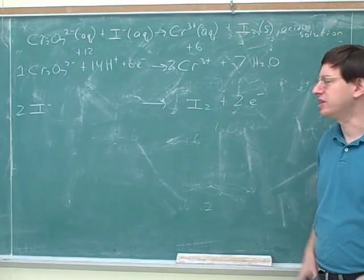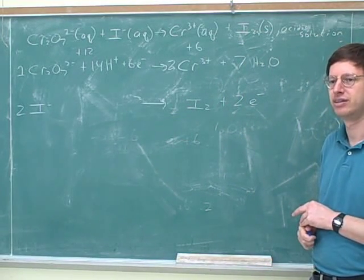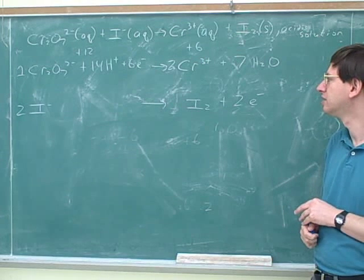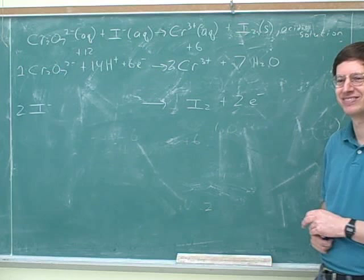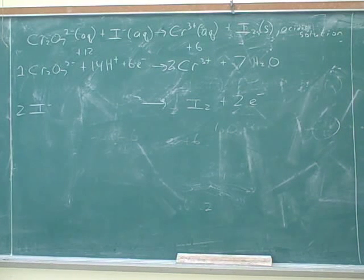What do they tell us to do now? It says, if necessary, multiply one or both half reactions by an integer to make the number of electrons gained in the reduction equal to the number lost in oxidation. Is that necessary here? Does that step make sense?